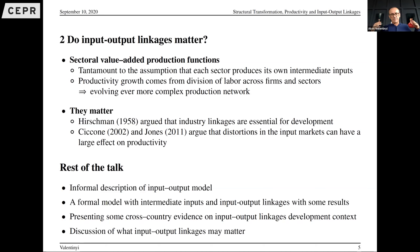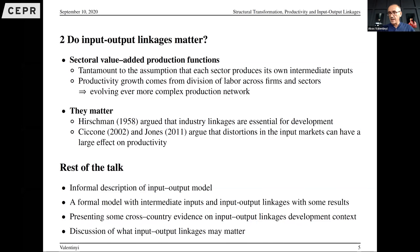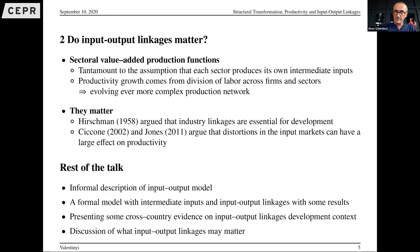At the same time, there is a whole series of thinking in economics that productivity growth comes from the division of labor across firms and sectors. This evolving, ever more complex trade between different entities in the economy is actually a source of productivity growth. Think of the 12,000 suppliers for Airbus, which are not all in aircraft manufacturing but come from textiles and all sorts of different places. So it is safe to say that input-output linkages likely matter, even before we formally study them. There are also technical issues with value-added production functions.